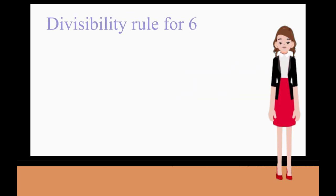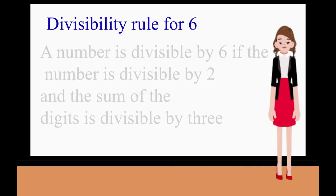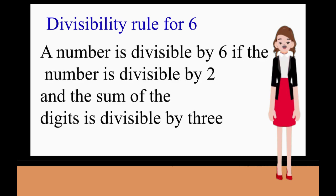Divisibility Rule for 6: A number is divisible by 6 if the number is divisible by 2 and the sum of the digits is divisible by 3.